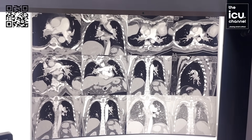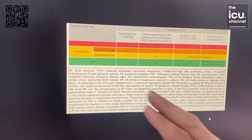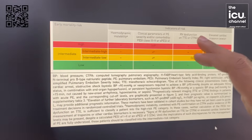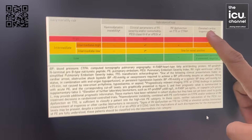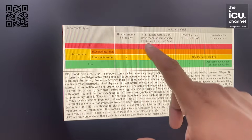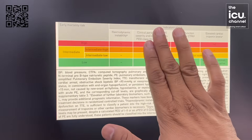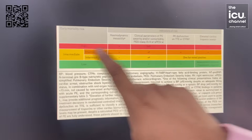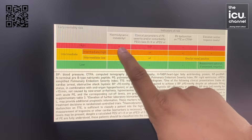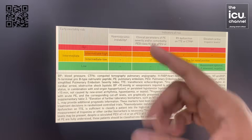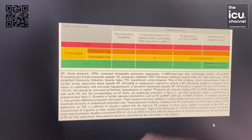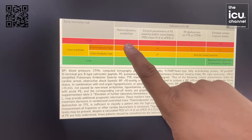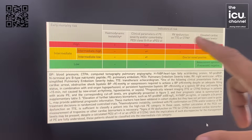The question is whether we need to thrombolyze this patient. According to guidelines, patients are divided into high, intermediate, and low risk based on three parameters: hemodynamic instability, RV dysfunction, and elevated cardiac markers such as troponin or pro-BNP. You can skip the pulmonary embolism severity index for simplicity and focus on these three. If the patient is hemodynamically unstable — meaning PE is obstructing forward flow causing hypotension — that is a clear indication to thrombolyze.